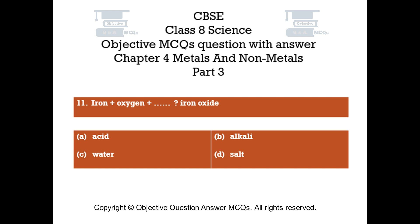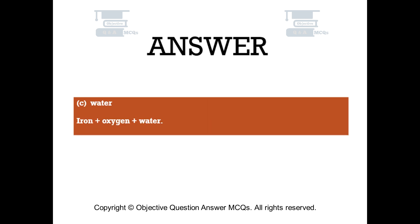Question number 11. Iron + oxygen + blank = iron oxide. Option A: acid. Option B: alkali. Option C: water. Option D: salt. The right answer is option C. Water. Iron + oxygen + water gives iron oxide.